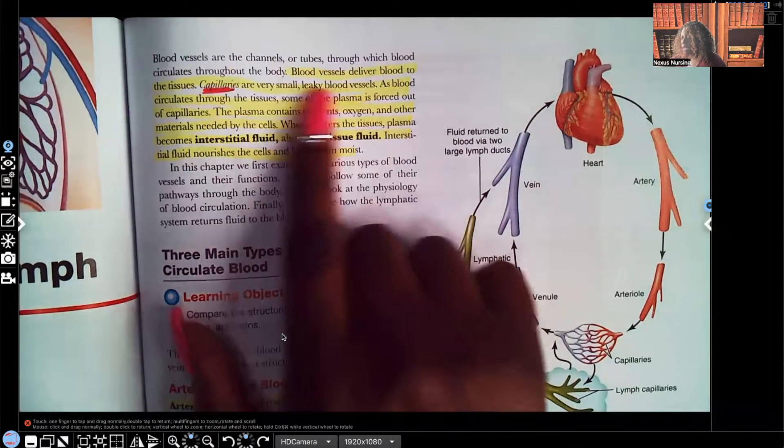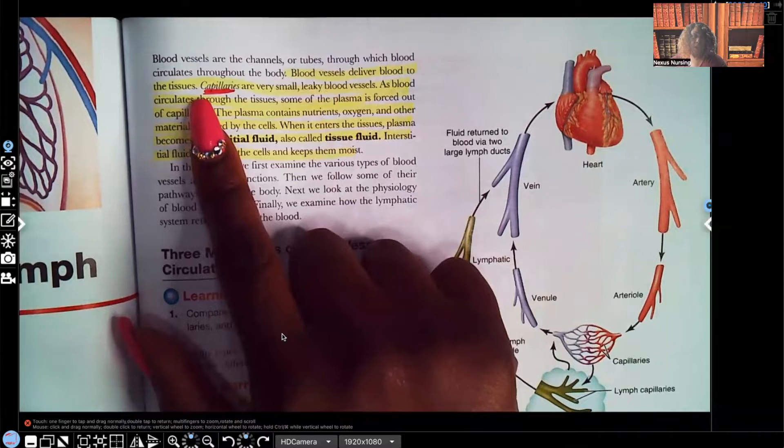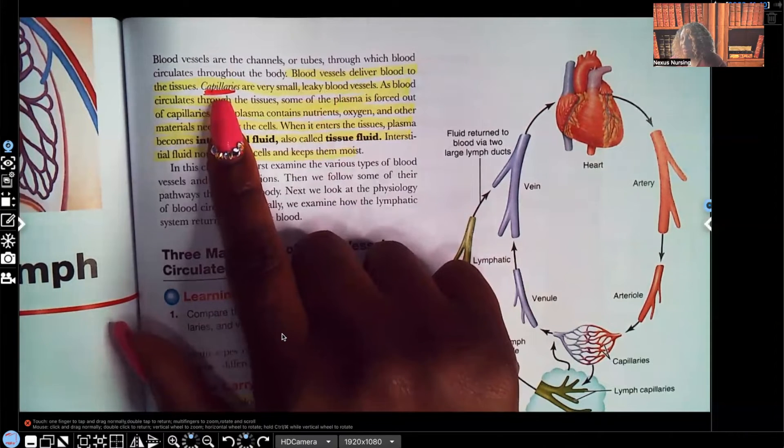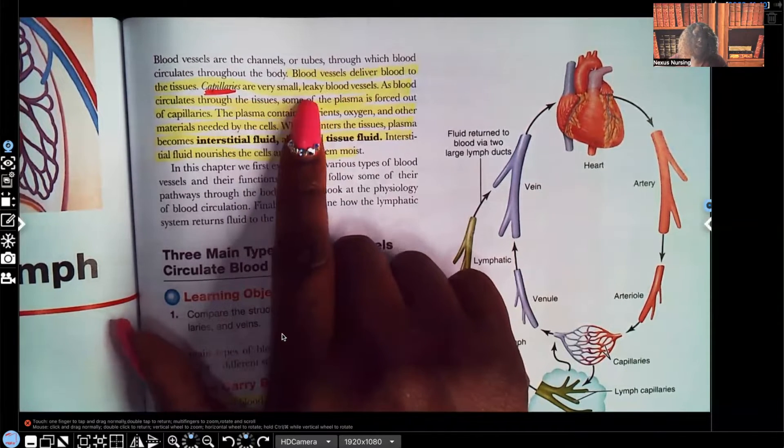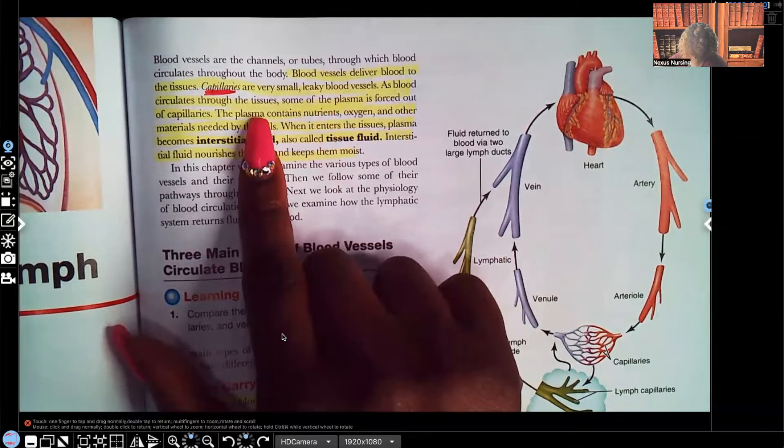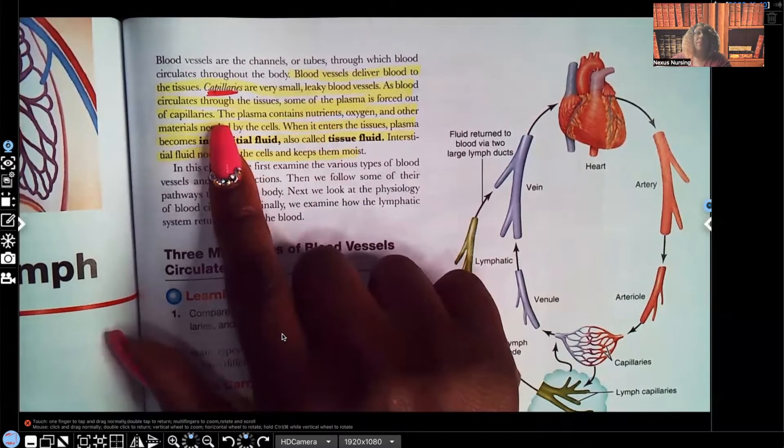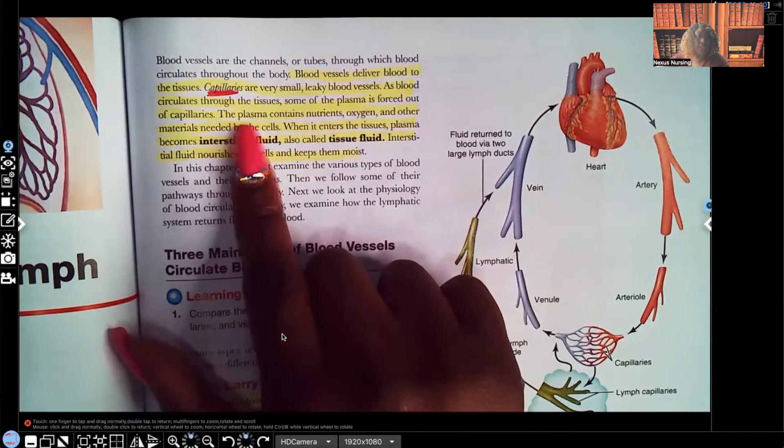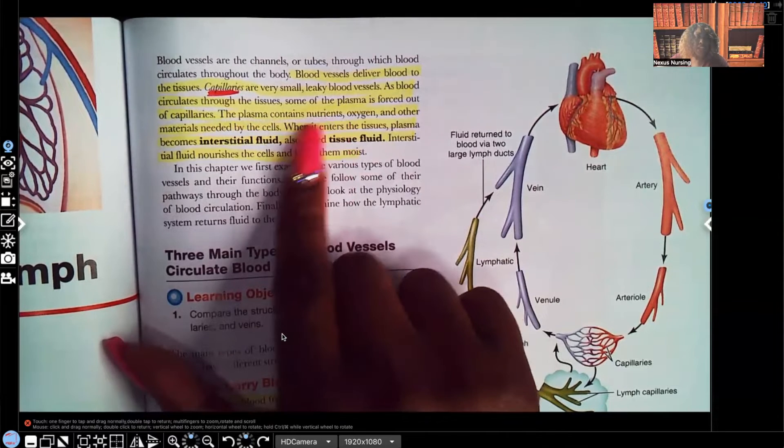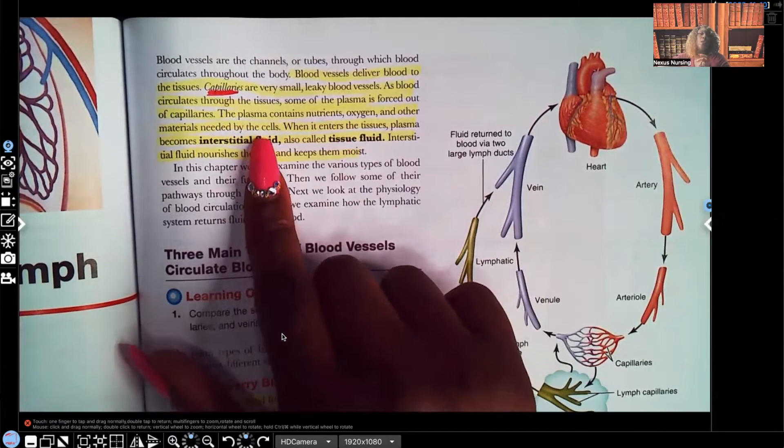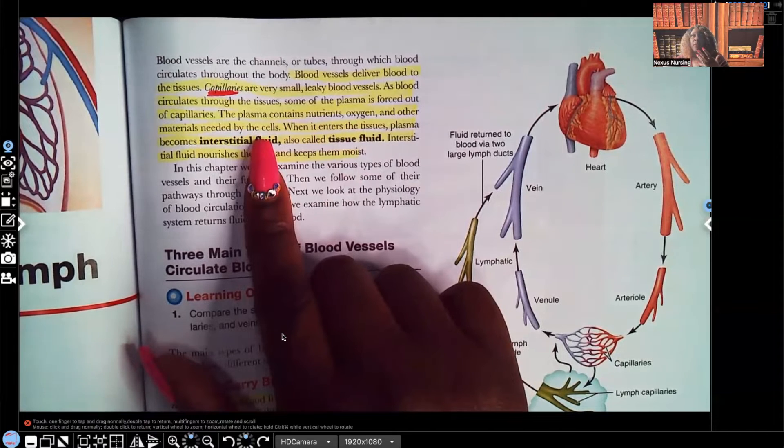Look what it says here. It says blood vessels deliver blood to the tissues. That's their job. Now, capillaries. Capillaries are very small, leaky blood vessels. As blood circulates through the tissues, some of the plasma is forced out of the capillaries. You need to think of these vessels kind of as a subway system, right? And then the subway has many stops where things can get on and things can get off. That's the blood vessel.